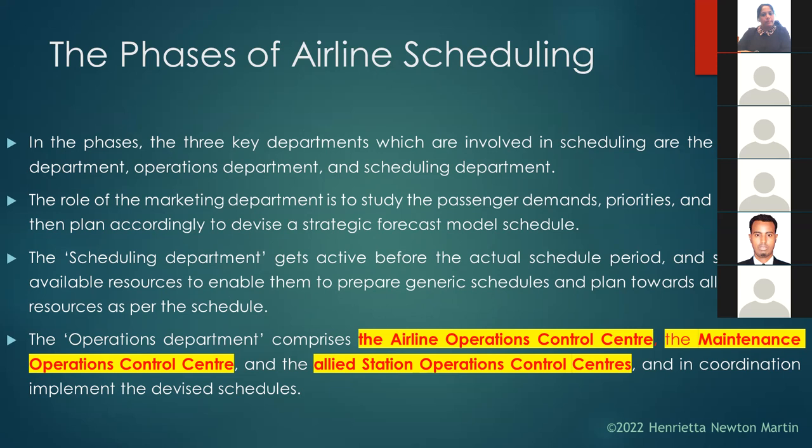The operations department comprises the AOCC — the Airline Operations Control Center, which is the nerve center — along with the Maintenance Operation Control Center (MOCC) and the allied station operations control center. In coordination, these implement the devised schedules. The operations department is responsible for implementing the devised schedules.